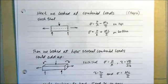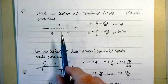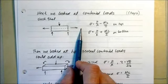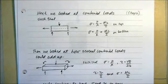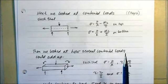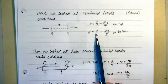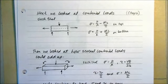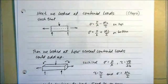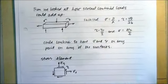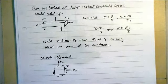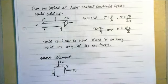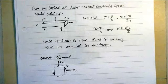That led us to chapter 6, where we looked at combined loadings of axial loads and bending loads. For a beam under both axial and bending loads, we discovered that we can add or subtract those two stresses depending on whether we're on the top or bottom. We also have combinations of bending, axial, and torsional loads that we can add together to find the stress element at any point.